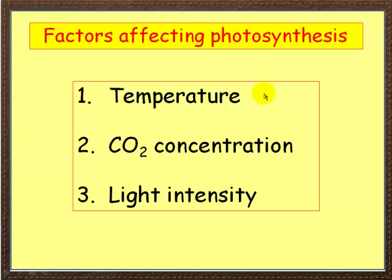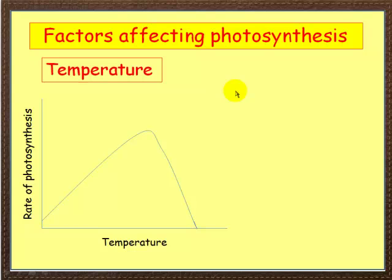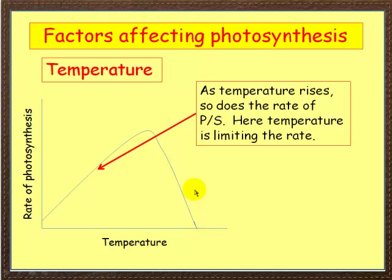Let's look at each one of those in turn, starting first of all with temperature. Here's a classic graph. On the x-axis we've got temperature, and on the y-axis we've got rate of photosynthesis. This could be measured, for example, by number of oxygen bubbles released by the plant. So we can measure this quite simply, also measure temperature, and we can do this experiment at a range of temperatures. This is the sort of graph we expect.